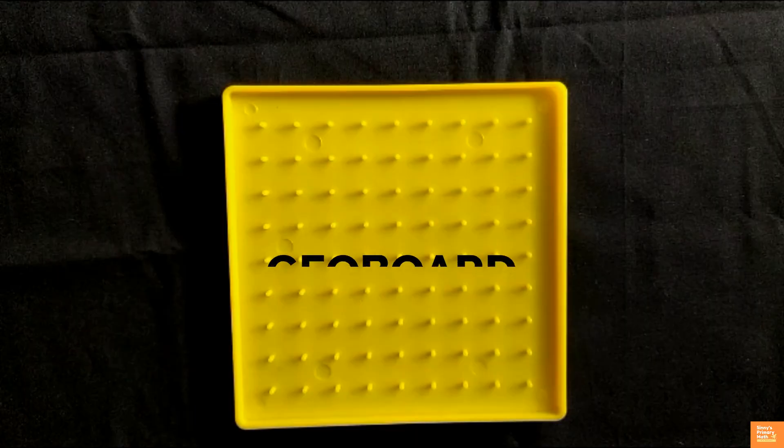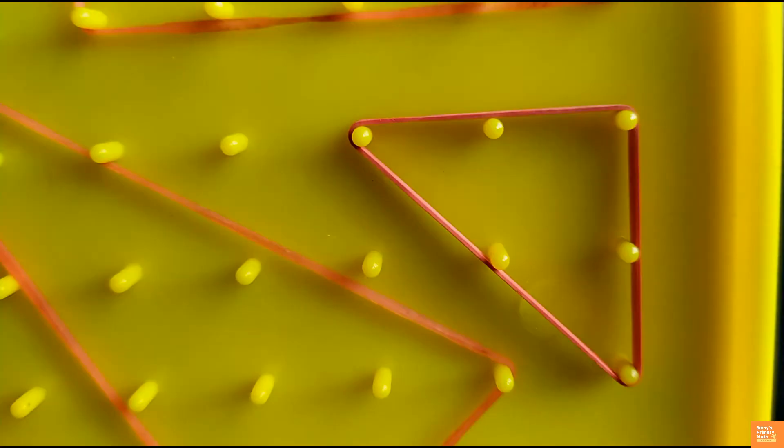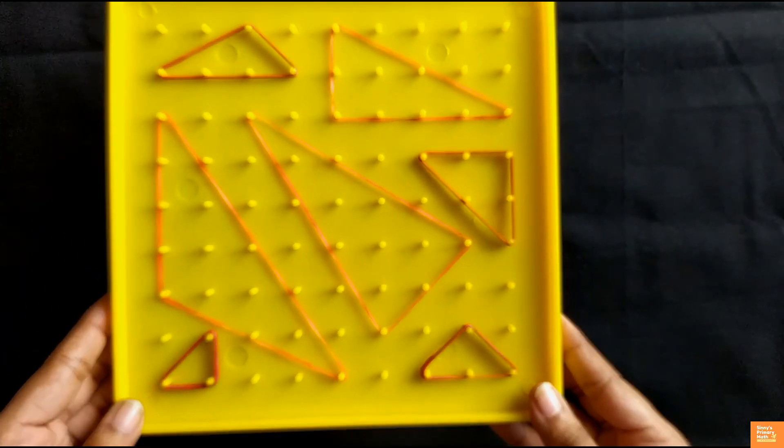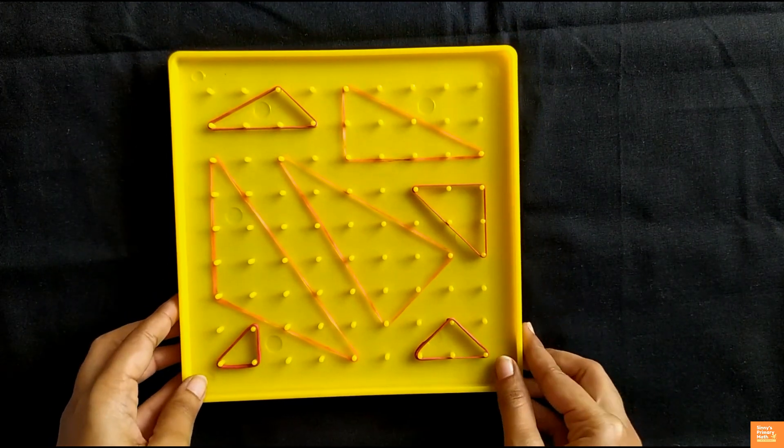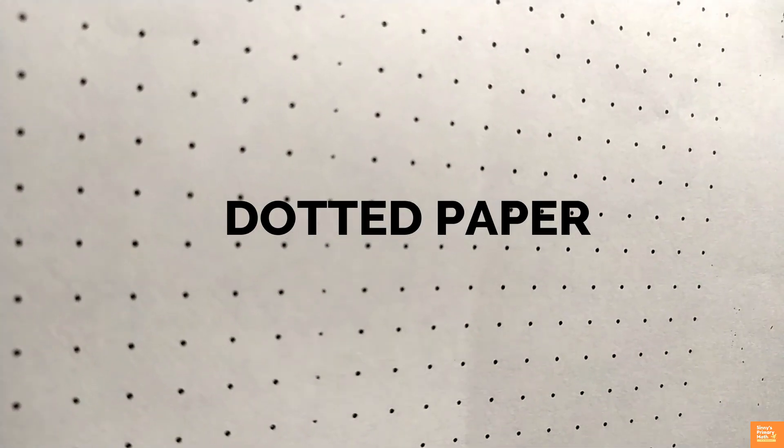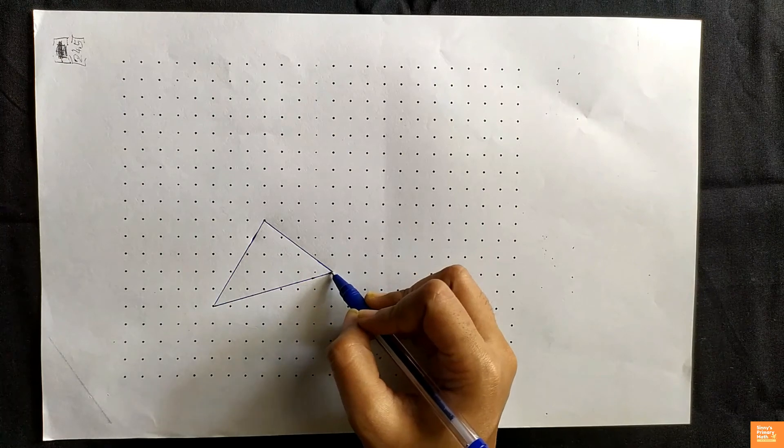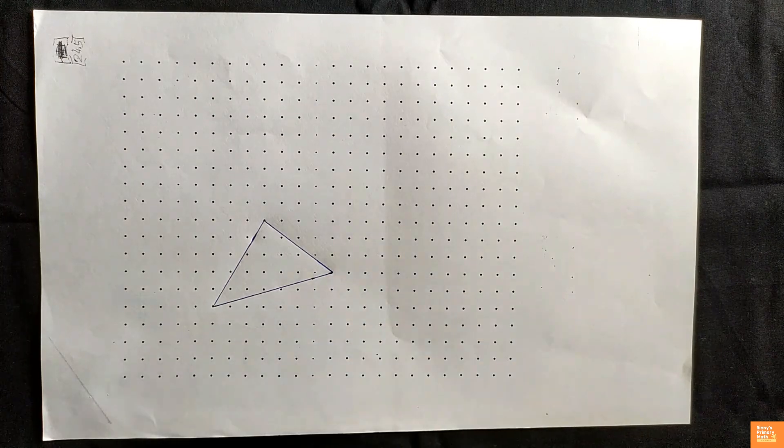Are you interested to play with triangles? Okay, this is a geoboard. Geoboards are quite useful for creating two-dimensional figures. You can construct various types of triangles using a geoboard. Dotted paper also can be used for this activity.